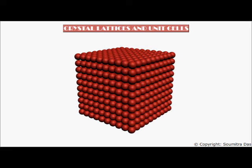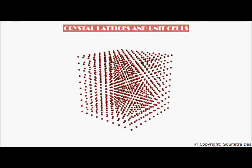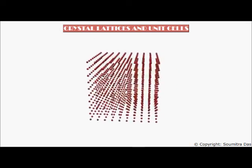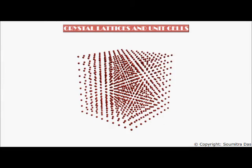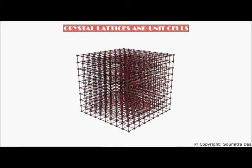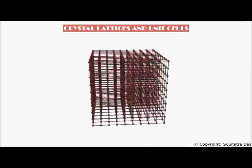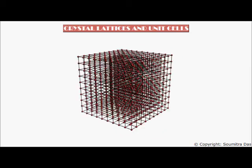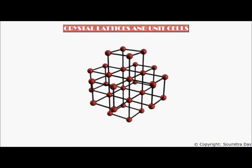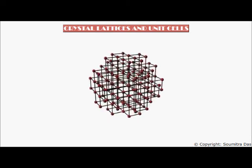We cannot study the geometry of a crystal properly in the close-packed form, so we make the spheres a little smaller in what we call the open structure of a crystal. The center of the spheres — in other words, the position of the spheres — are called lattice points. These lattice points are joined by straight lines. The smallest portion inside the lattice is called the unit cell, which when repeated in all directions gives us the entire lattice.